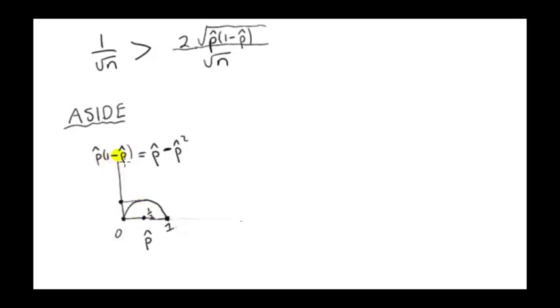The value of P hat equals a half gives us the maximum value for this expression. So if we plug a half into this thing, we get a half minus a half squared. That's a half minus a quarter, which is a quarter.